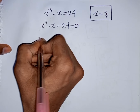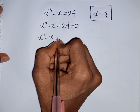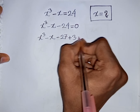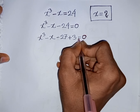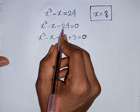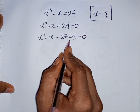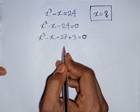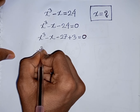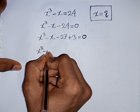Now, you can write x cube minus x minus 24, where minus 24 can be written as minus 27 plus 3. The nearest cubic number to 24 is 27, so you can write minus 24 as minus 27 plus 3. Therefore, x cube minus 27 is the same as minus 3 cube.